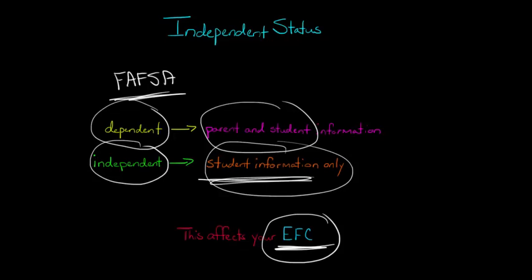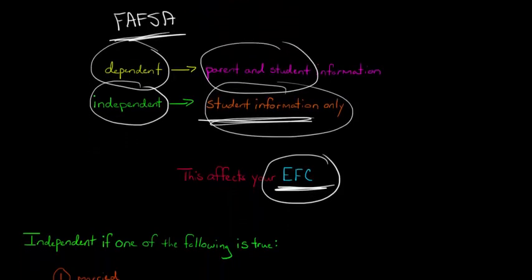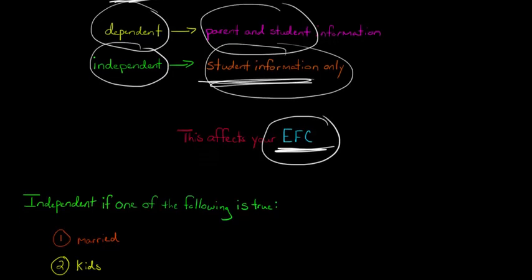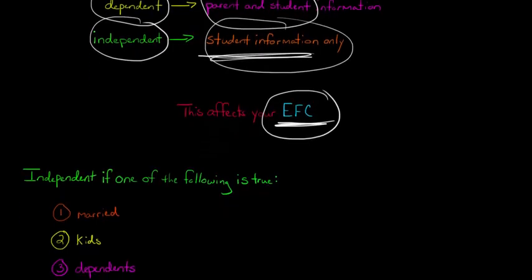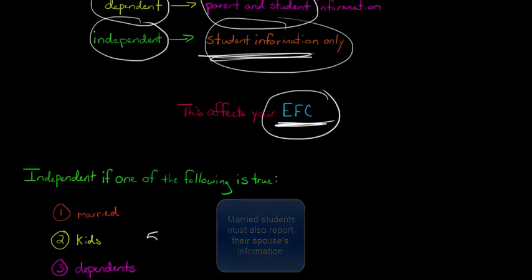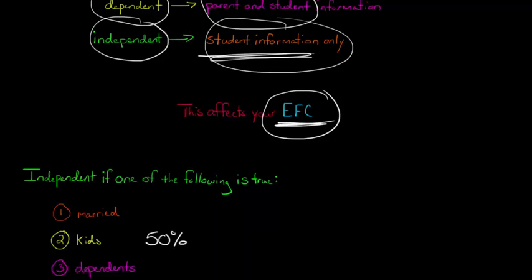So that is what it means to be an independent student. How do you qualify for being an independent student? We have to answer yes to one or more of the following questions. You have to be either married or have kids.